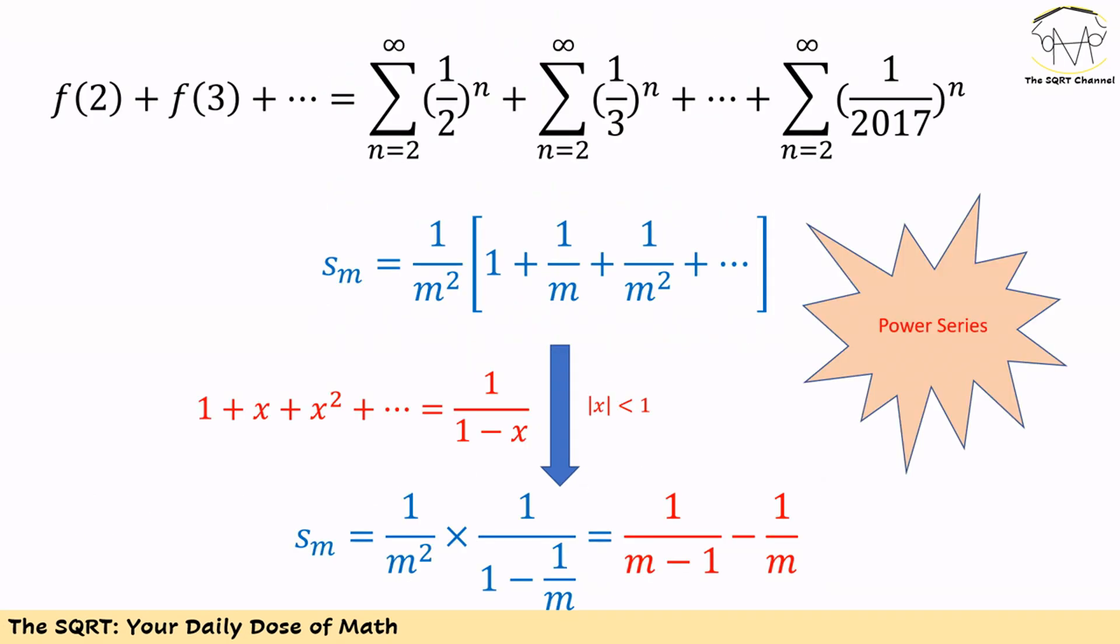To simplify the problem, let's start with a new notation. We denote s_m as 1 over m squared times 1 plus 1 over m plus 1 over m squared and so on so forth.